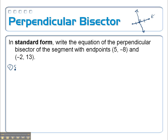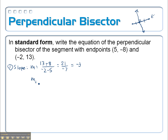So step number one, let's find some slope. So change in y: 13 minus a negative, so plus 8, over — going in the same order — negative 2 minus 5. So on top I have 21 over negative 7, which is negative 3. So that's the slope of this segment. I want the slope of the perpendicular line, so I have to take the negative reciprocal of that, which is positive one-third.